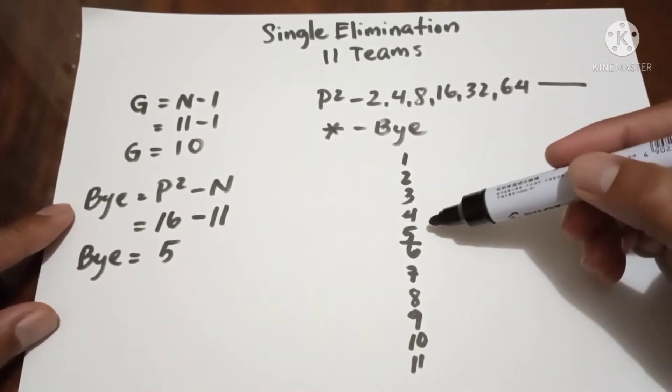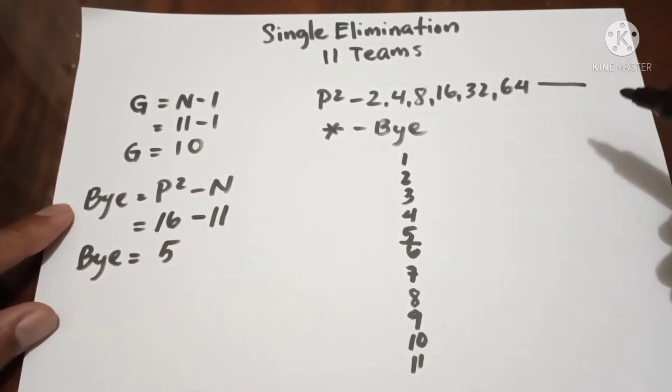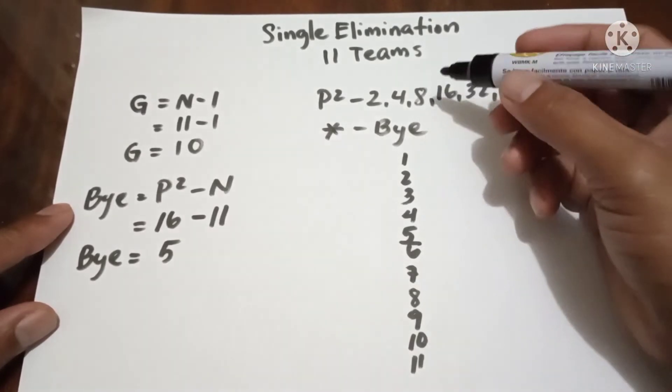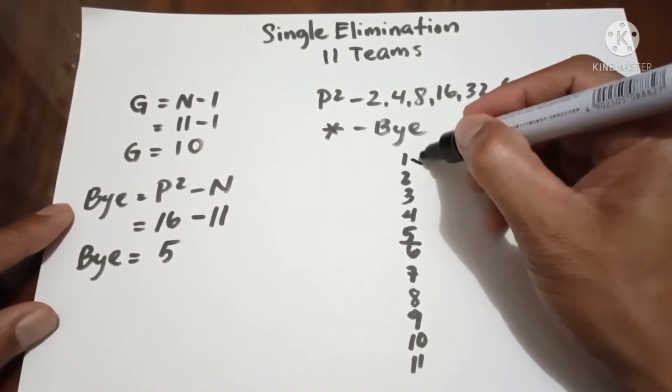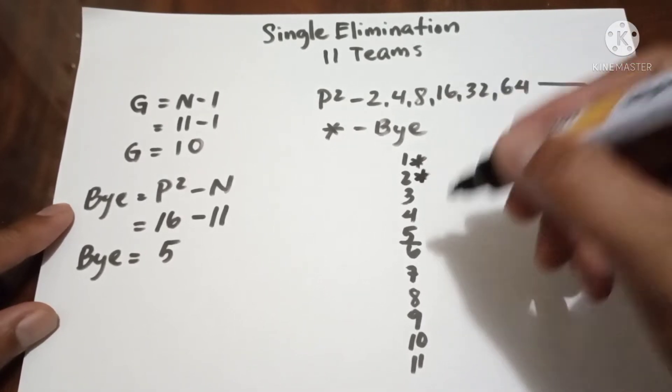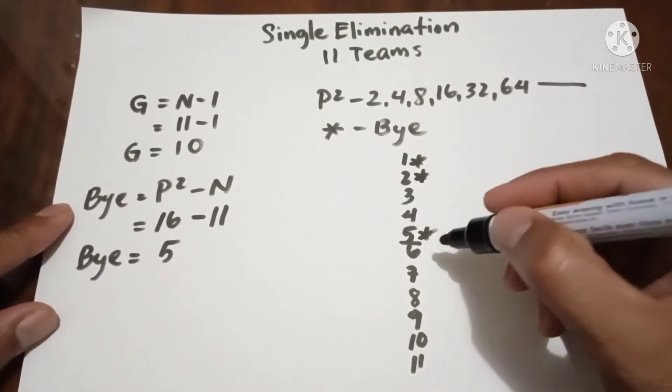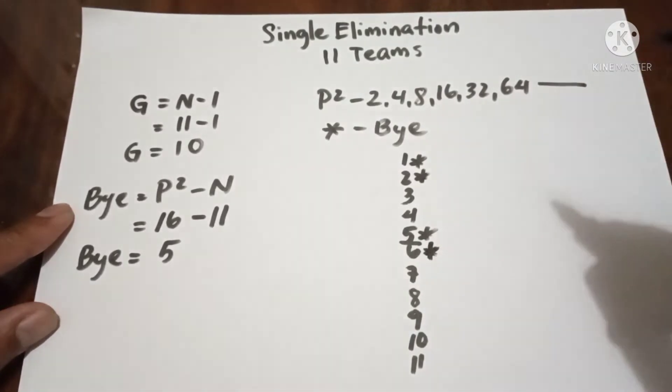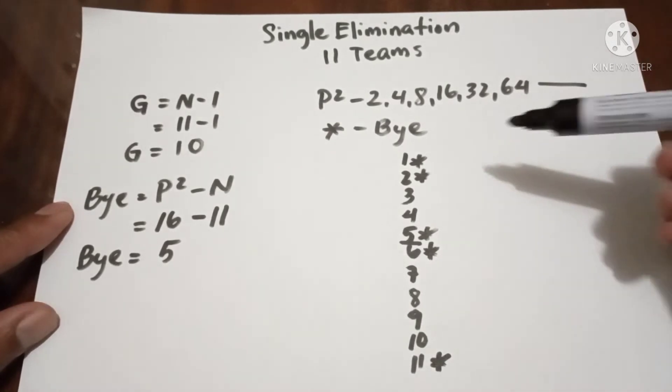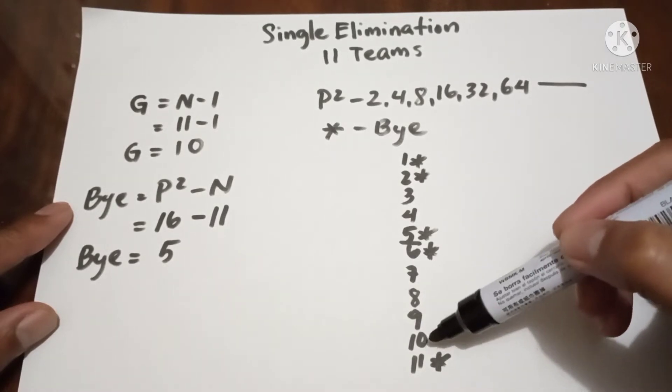Now let us place the 5 byes in 11 teams. In the upper bracket we have 5, and in the lower bracket we have 6. So in the upper bracket we have 1, 2, and 5, and in the lower bracket we have 6 and 11, meaning we have 1, 2, 3, 4, 5, 6 competing teams in the first round.